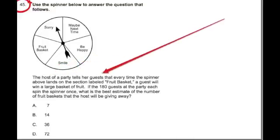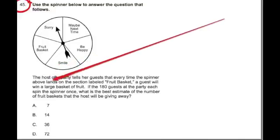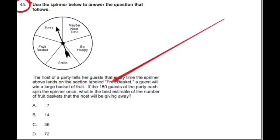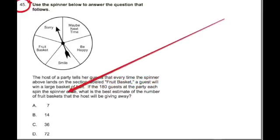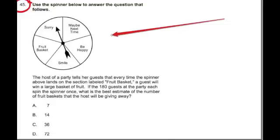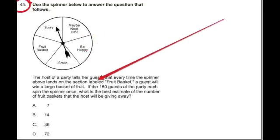The host at a party tells her guests that every time the spinner above lands on the section fruit basket, the guests will win a large basket of fruit. If 180 guests at the party each spin the spinner once, what is the best estimate of the number of fruit baskets the host will be giving away? Ah, the fruit basket question. I've never been to a party where the host is spinning a spinner and passing out fruit baskets, but in this party of 180 people, a lot of people are going to go home very lucky with a fruit basket. And let's figure out how we would do this.